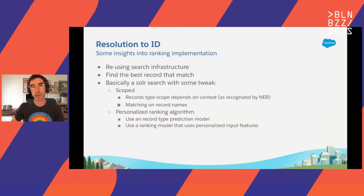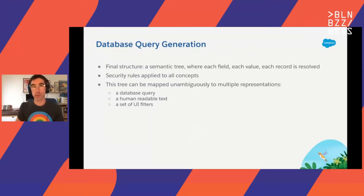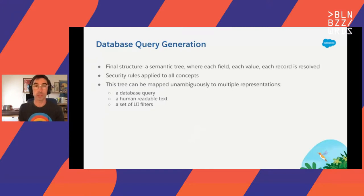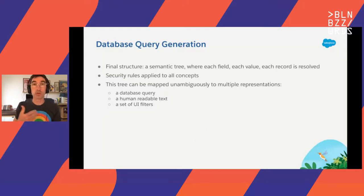Those two models existed before and we reused and tweaked them for natural language. Once we have a semantic tree with Resolution2ID complete, we have a semantic tree whose leaves are resolved — each field is resolved, records are resolved to IDs. We can now apply security rules, so some semantic trees are not visible to the user because they don't have access to parts of it. This tree can be mapped without ambiguity to different representations: it can be mapped to a database query, but also to a user-friendly message or to UI filters. The same tree can be mapped to all representations.